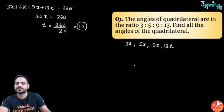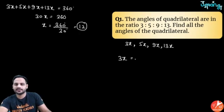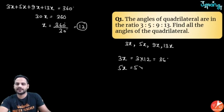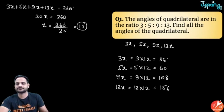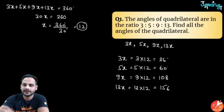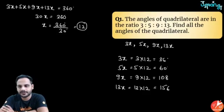x = 12, so the four angles are: 3x = 36°, 5x = 60°, 9x = 108°, and 13x = 156°. These are the four angles of that quadrilateral.